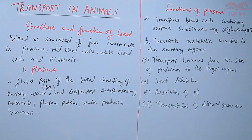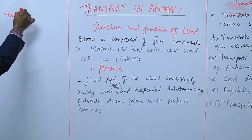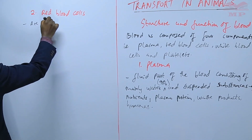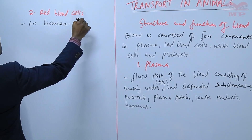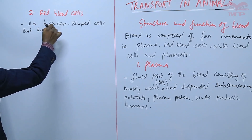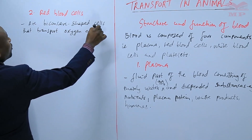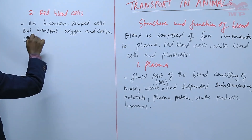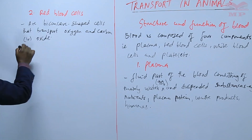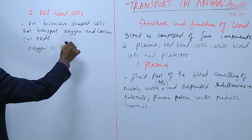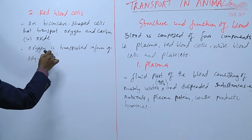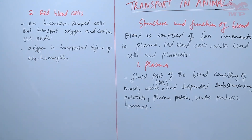The next component of blood is the red blood cells. These are biconcave shaped cells that transport oxygen and carbon dioxide. So mainly the work of red blood cells is to transport oxygen and carbon dioxide, and oxygen is transported in the form of oxyhaemoglobin — that is, oxygen plus haemoglobin.